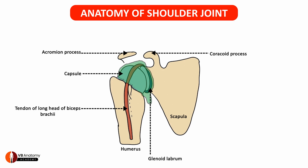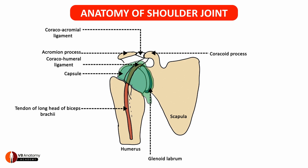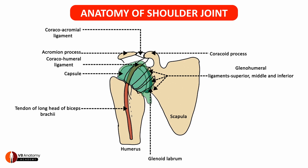The shoulder joint is further supported by a number of ligaments. Between the acromion and the coracoid is the coracoacromial ligament superiorly. From the coracoid process to the humerus is the coracohumeral ligament. Three glenohumeral ligaments are formed anteriorly: the superior glenohumeral, middle glenohumeral, and the inferior glenohumeral.